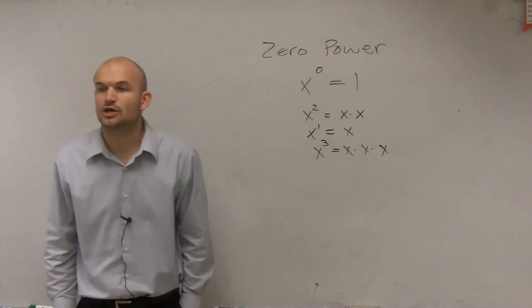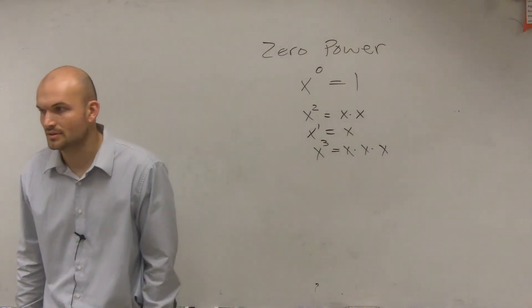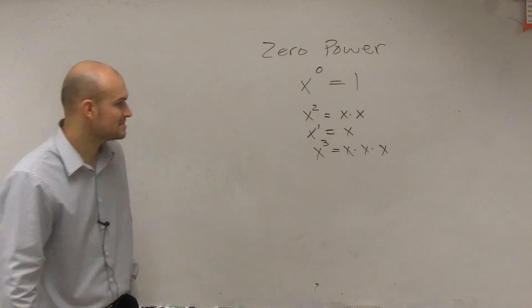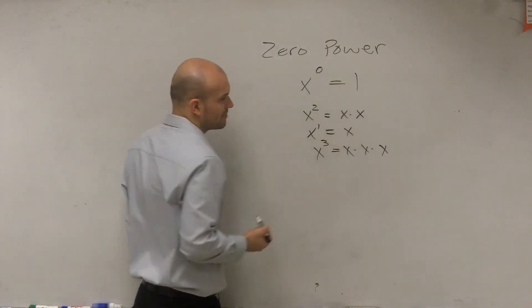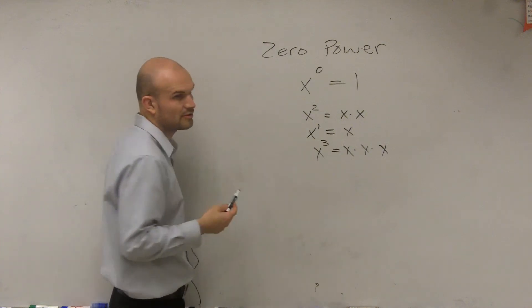Alright, so a number multiplied by itself zero times, if you just work back, well if you work into a, let's go and take a look at this, let's take a look at the number 3.